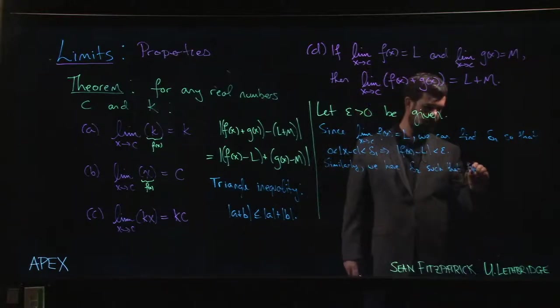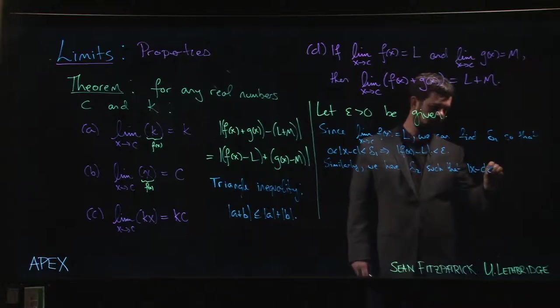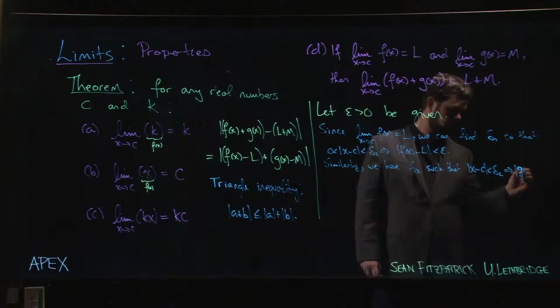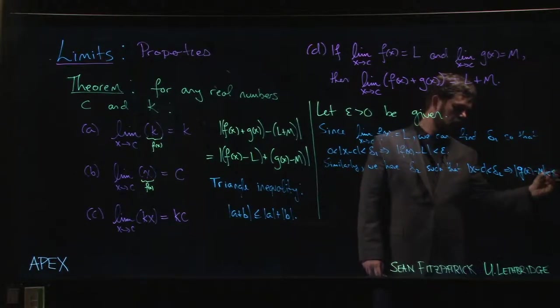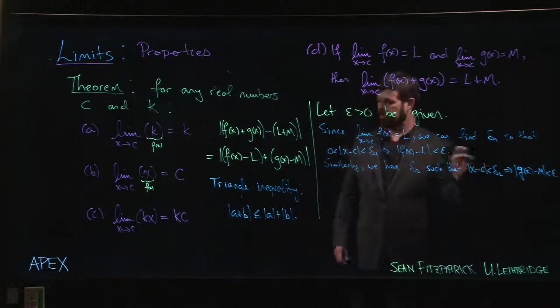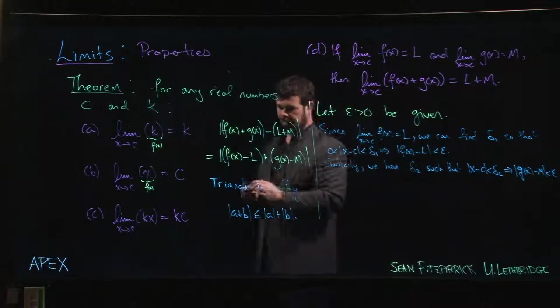Such that having 0 < |x - c| < delta_2, that's going to make the difference between g(x) and M less than epsilon.